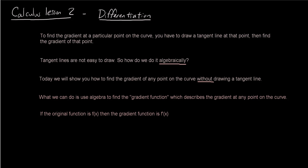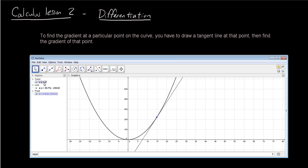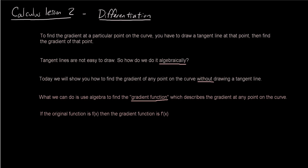So what we're going to do is use algebra to find what we call the gradient function. What is the gradient function? The gradient function is a function that describes the gradient at any point on the curve. Our original function in this case is y equals x squared, or in function notation, f of x is equal to x squared. What we're trying to find now is f dash x, which is going to tell us the gradient at any point on that curve without drawing the tangent line.